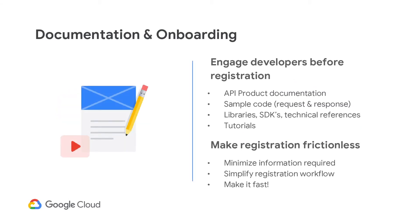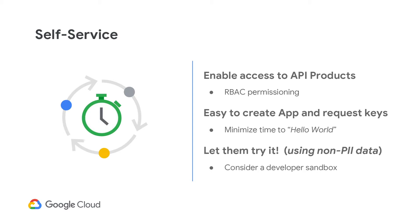Proper documentation will facilitate onboarding and adoption. Putting effort into complete documentation upfront will improve the adoption rate and can reduce the amount of support needed down the road. Note that documentation needs to be maintained over time, so plan for a team to update content on your developer portal. Make your onboarding process frictionless by minimizing the amount of information required to register — we recommend obtaining basic information such as name, email address, company, and a brief description of the application the developer plans to create. The easier you make registration, the faster you can onboard the developer. Self-service on your developer portal is key to adoption.